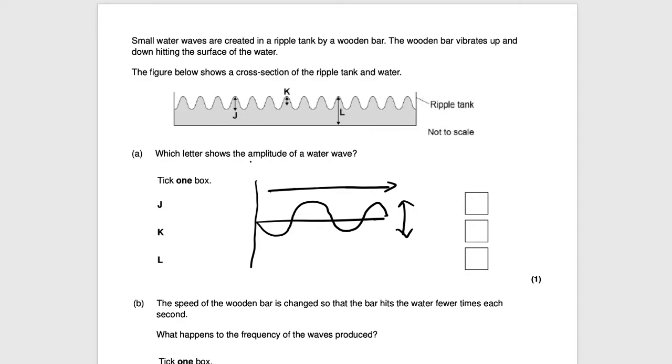Now the amplitude is the maximum point from its undisturbed position. So the maximum displacement, and the undisturbed position is the line which is this one over here. The amplitude is the maximum displacement. So it goes from the undisturbed position to this part. So that's the amplitude.